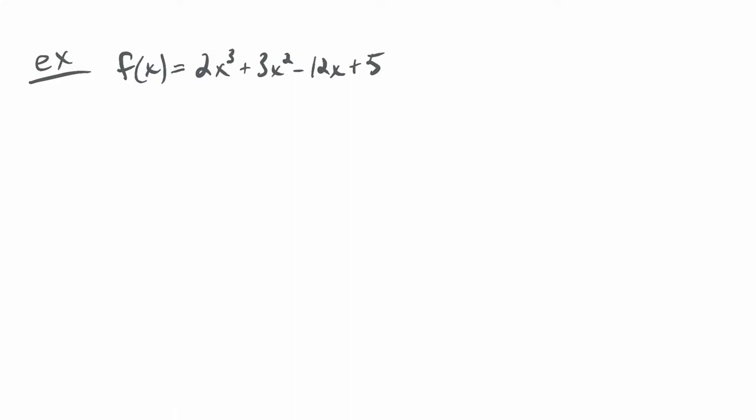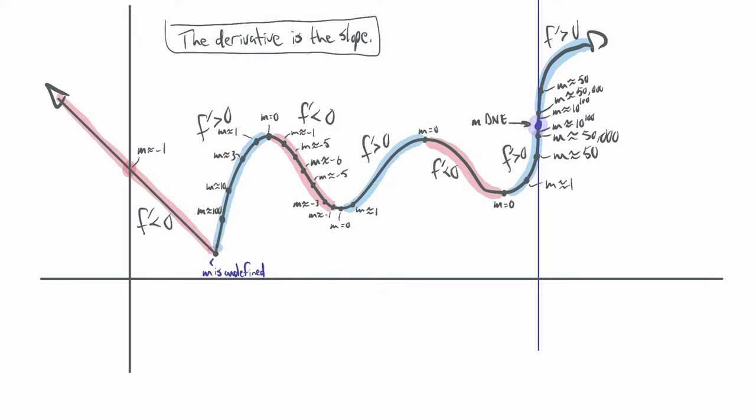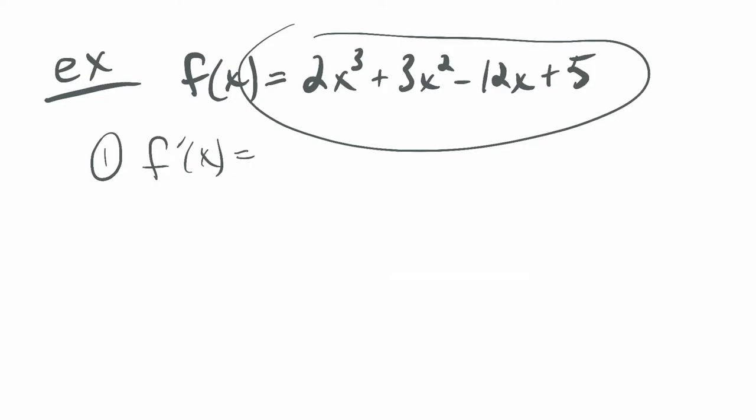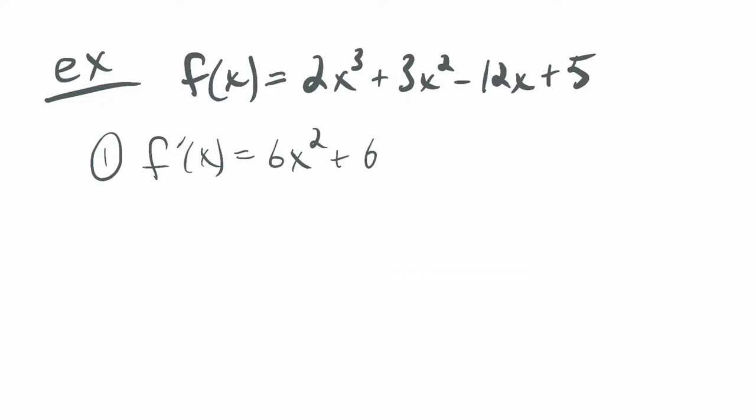Let's do an example. If we have f(x) = 2x³ + 3x² - 12x + 5, can I figure out where the graph would be increasing and decreasing based upon the connection between the derivative and the graph? Step one: I need to find the derivative. f'(x) = 6x² + 6x - 12, just using the power rule.